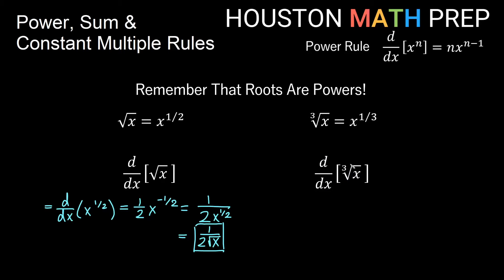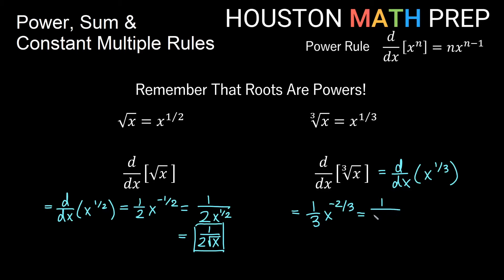For the derivative of the cube root of x, rewrite as x to the one-third power and apply the power rule: one-third comes out front, and one-third minus one gives x to the negative two-thirds. To rewrite without a negative exponent: one over three times x to the two-thirds. Since the two-thirds power means squared over cube root, this becomes one over three times the cube root of x squared.